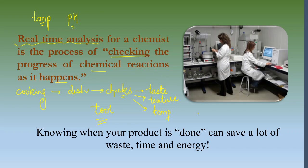If you try the process at lab scale, monitoring real-time and checking all the parameters, you'll be able to improve it. The final takeaway is: knowing when your product is done can save a lot of waste, time, and energy. I hope with that you're able to understand what Principle 11 is all about. Do hit a like for motivation, and if you're new to my channel, please subscribe. Thank you so much.